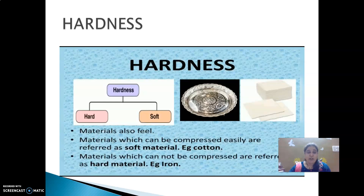So under appearance, what are the four properties we discussed? The first one is color, the next one is luster, then texture, and the last one is hardness. So far we discussed about common characteristics of materials, what various objects are made of, and we discussed a few properties like physical state and appearance — under which we covered color, texture, luster and hardness. Thank you.